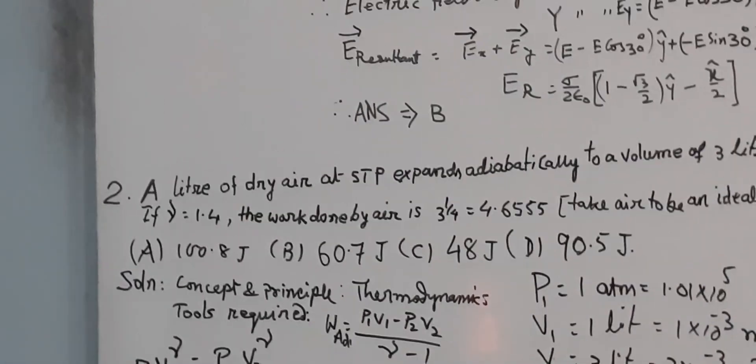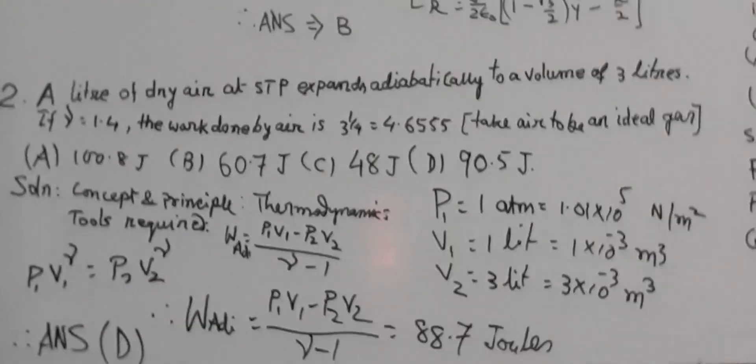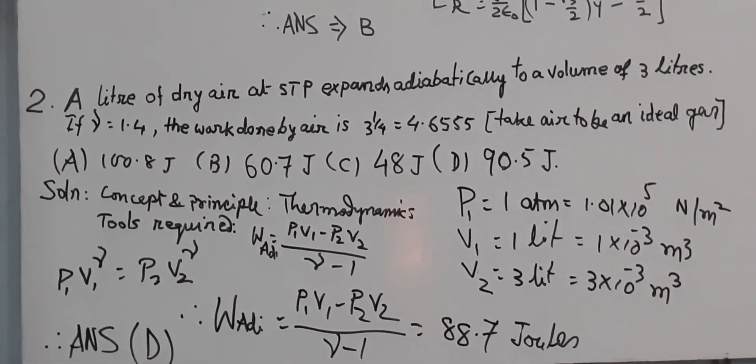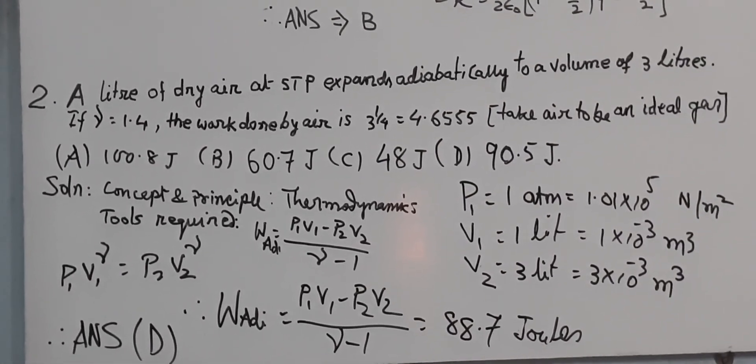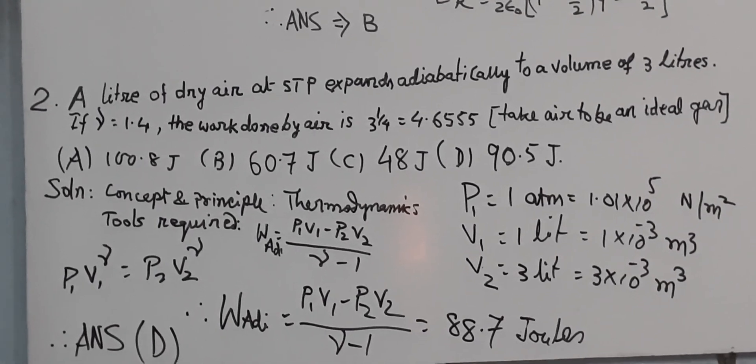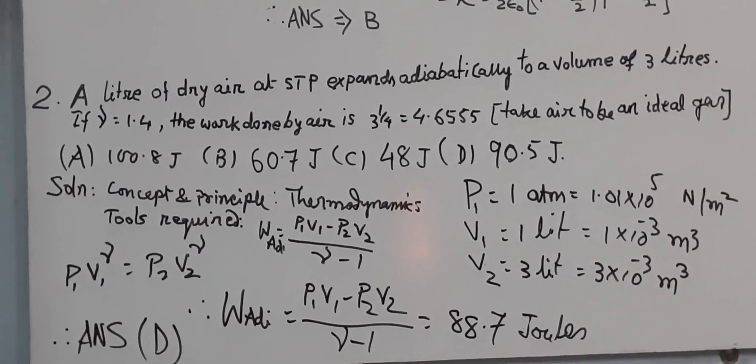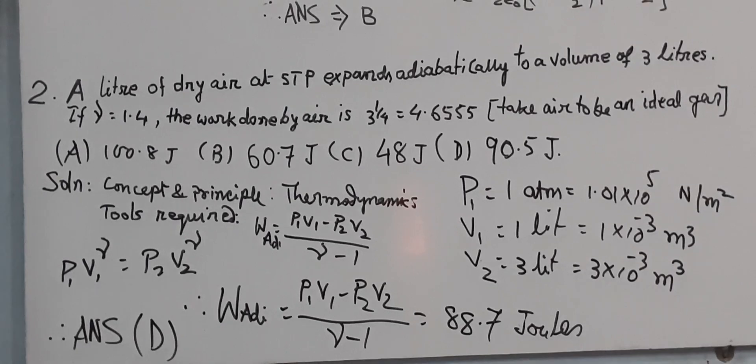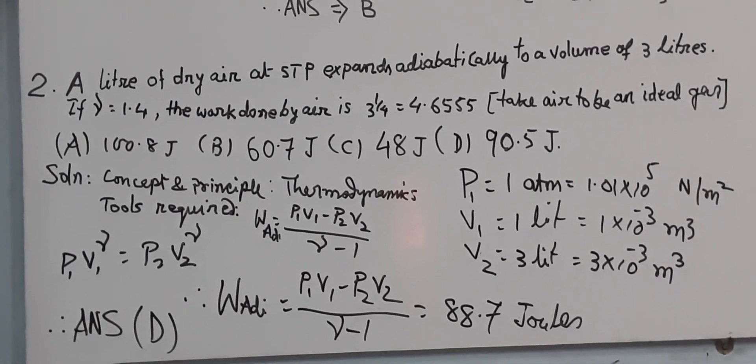Then, come to second question, that is, a liter of dry air at STP expands adiabatically to a volume to 3 liters. You have to find out work done for this. Gamma is provided, 1.4, and this air to be taken as ideal gas.